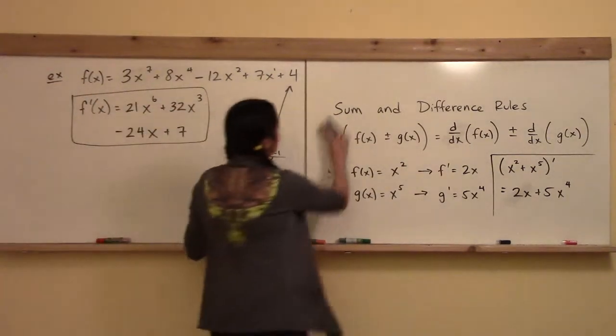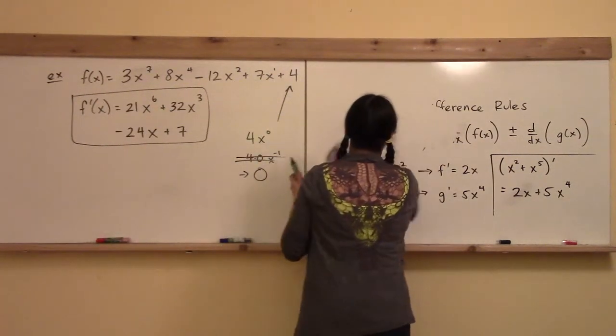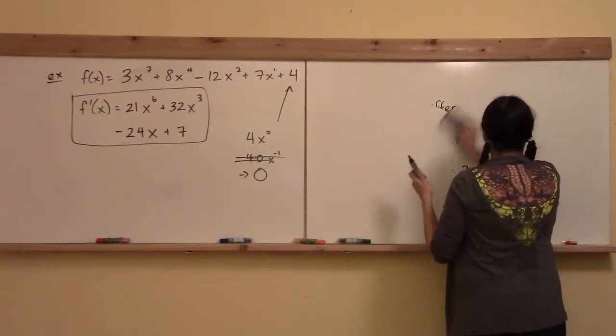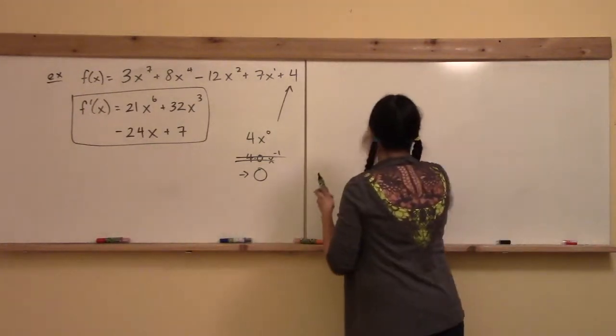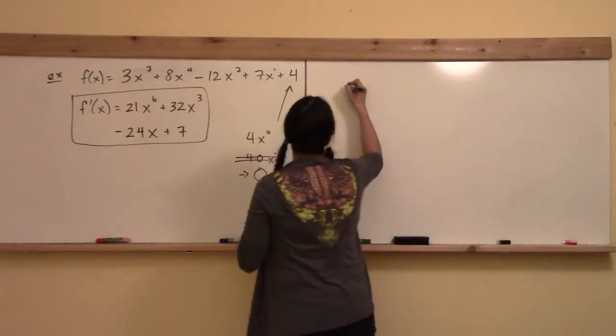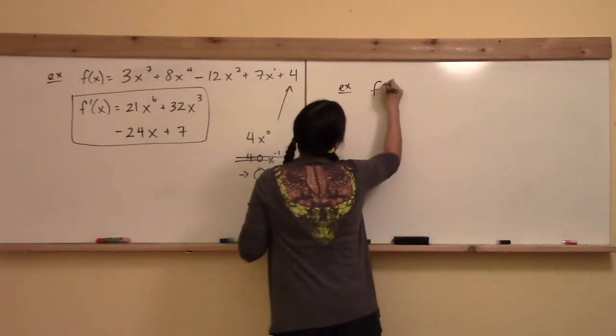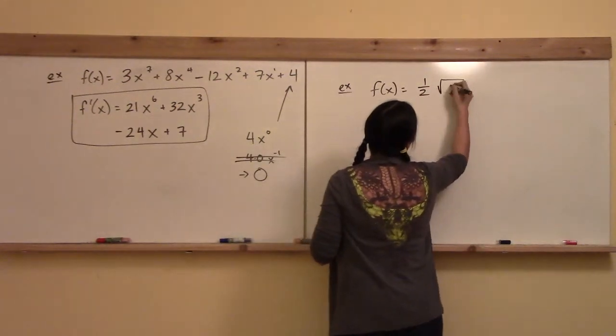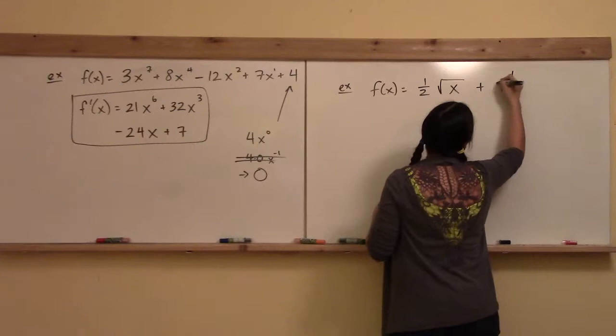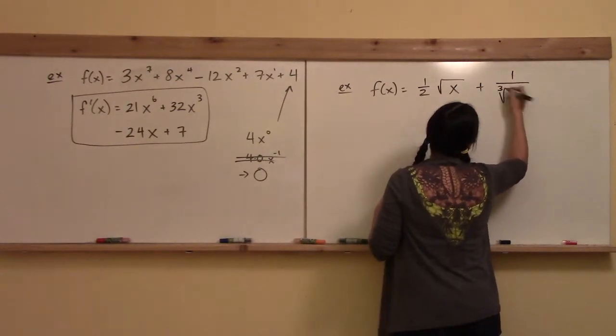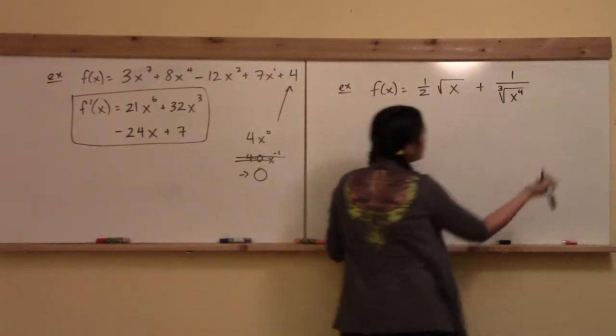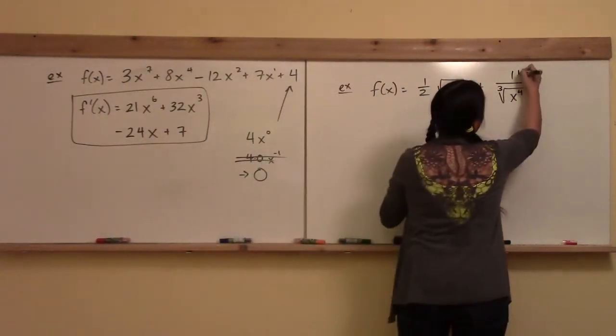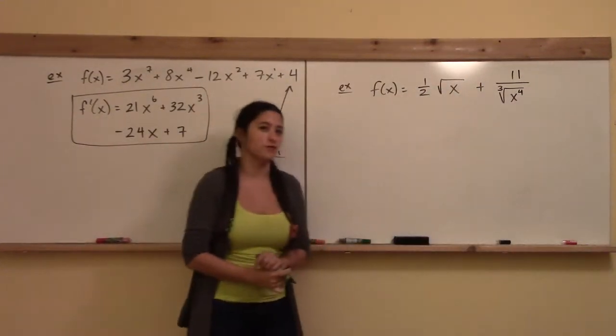Let's practice that one more time, and this time I'm going to throw in some fractional and negative powers to help you keep up with those. Let's say f(x) is 1/2 times the square root of x plus 11 over the cube root of x⁴. This is a crazy one. Let me put an 11 up here so we can use more of our rules.